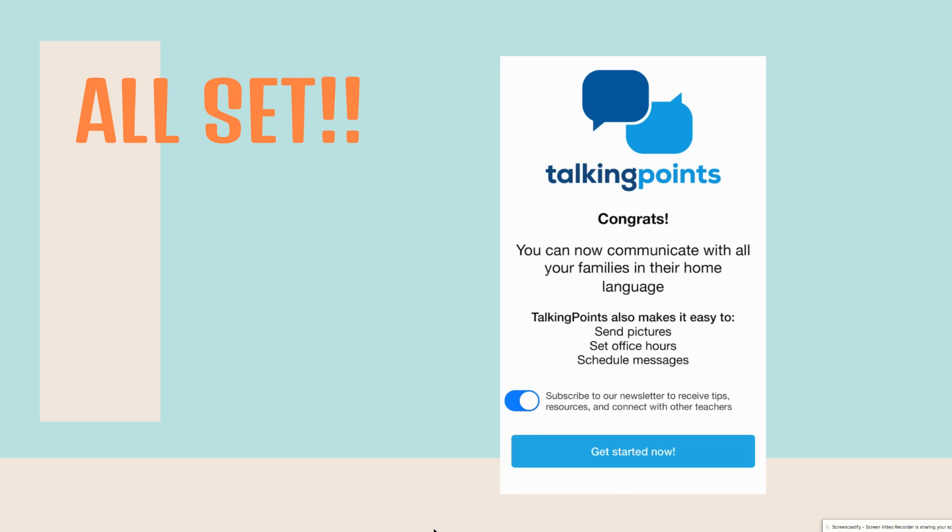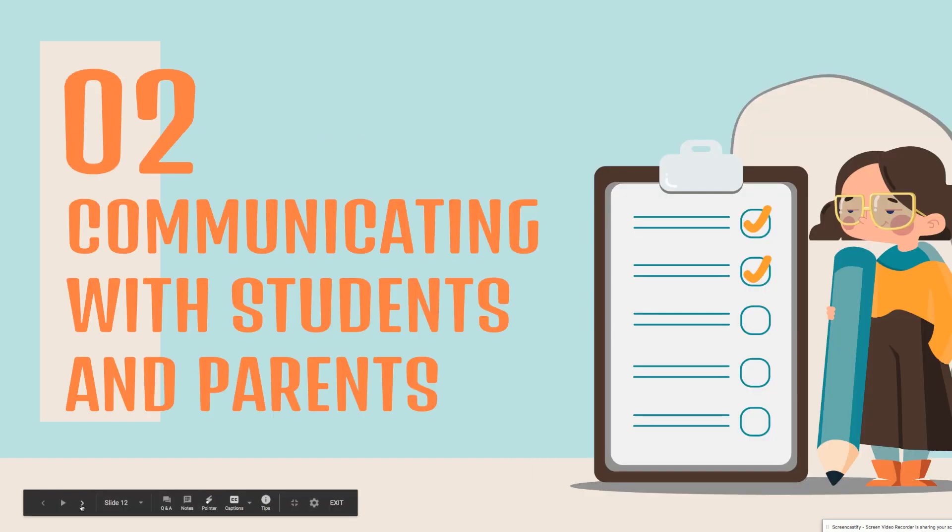Once you do that, you're basically all set. The next thing you get prompted to do is start adding contact information. You'll see a window that says 'you can now communicate with all your families in their home language.' It lets you know that you're able to send not only text messages, but also pictures, set office hours, schedule messages, send videos, and also do a poll — you can ask a question with options and students can select from the options you provide.